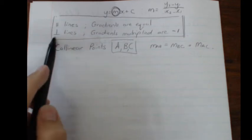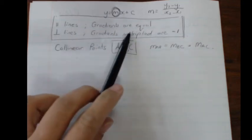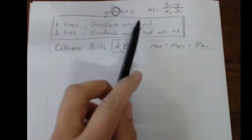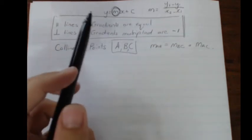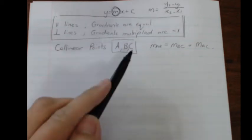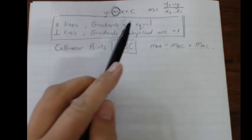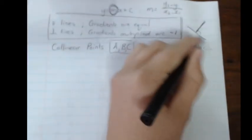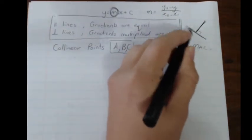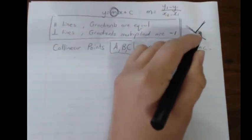For perpendicular lines, the gradients multiplied equal negative one. So if you take one gradient and multiply it with the other gradient of the perpendicular line, it should always give you negative one.